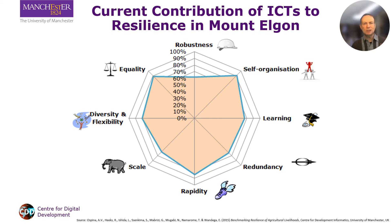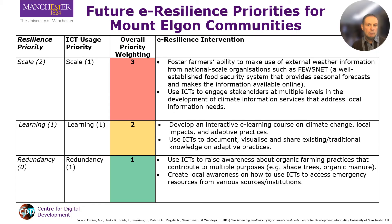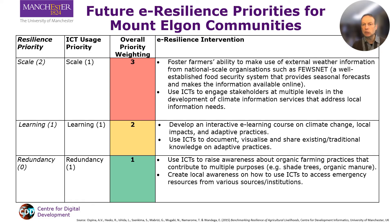In step three, we put the results from steps one and two together to work out the combined priority for future application of ICTs towards building resilience in these communities. An example of the results is shown here. Scale was a high priority from the step one assessment and a medium priority from the step two assessment, so overall it was a high priority for future action. Examples are given in the table of the ICT interventions needed to strengthen scale, such as linking the farmers in the community to a national level famine early warning system that could provide them with information and help if weather problems were predicted to hit the community.